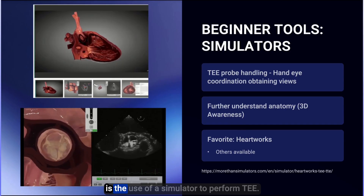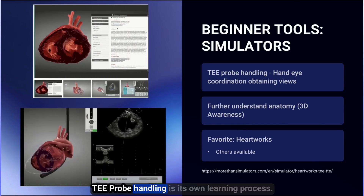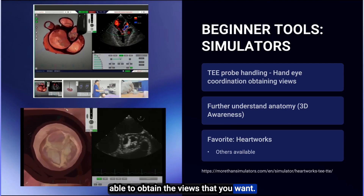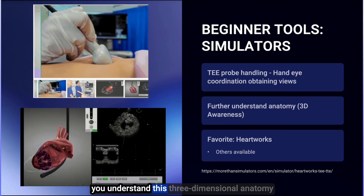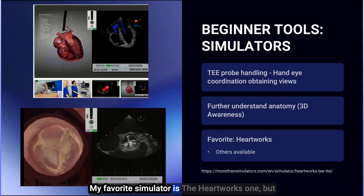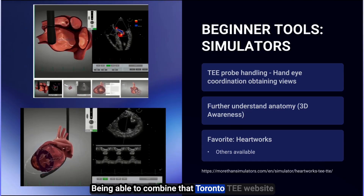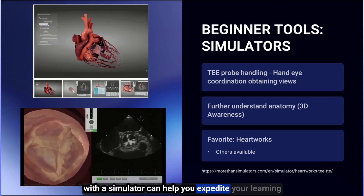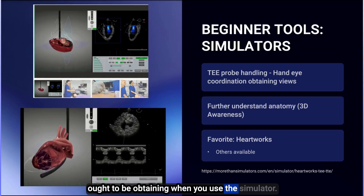The next beginner tool I want to recommend is the use of a simulator to perform TEE. TEE probe handling is its own learning process — learning the hand-eye coordination to obtain the views that you want. Using a simulator can also help you understand this three-dimensional anatomy while looking at two-dimensional images. My favorite simulator is the HeartWorks one, but there are several products out there that can all work. Combining that Toronto TEE website with a simulator can help expedite your learning.